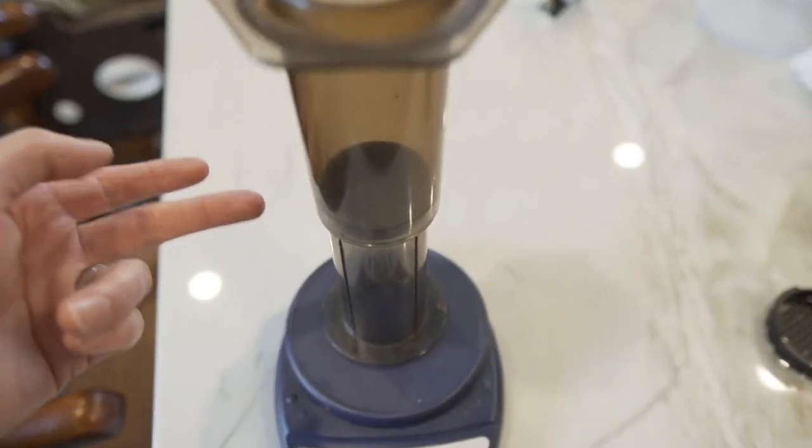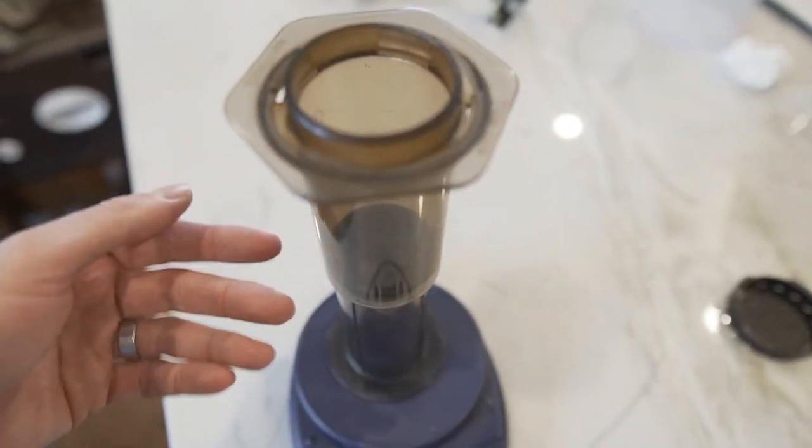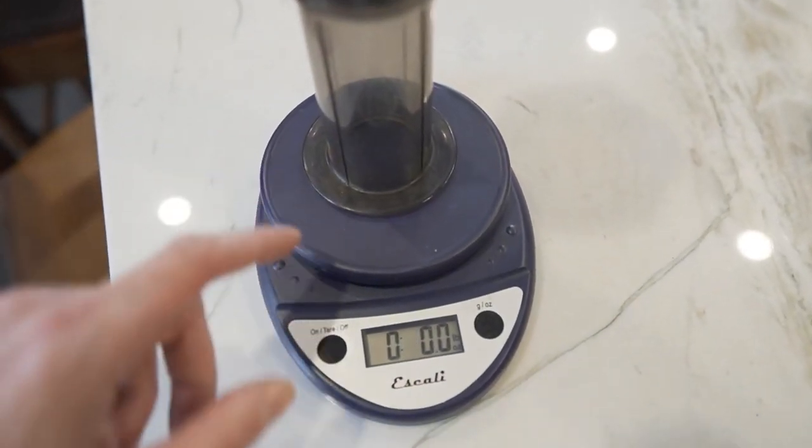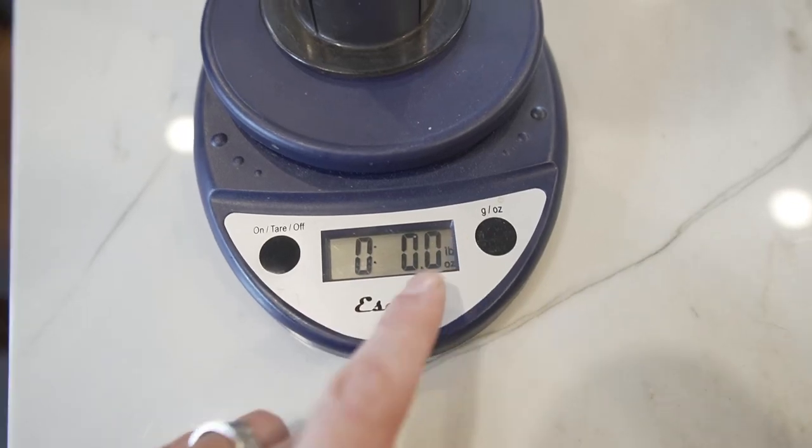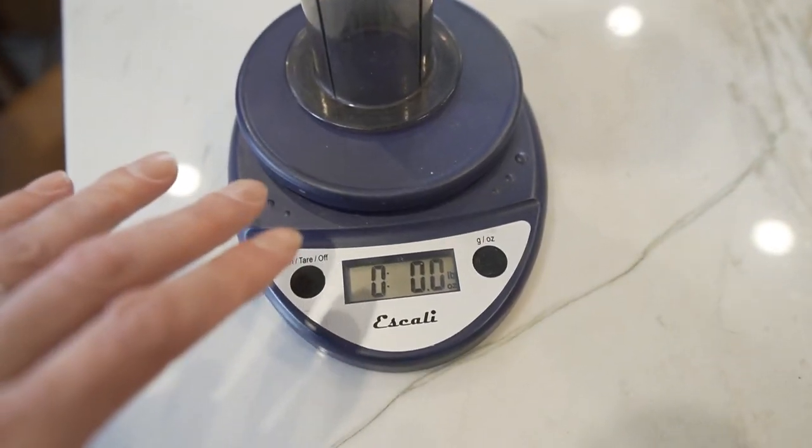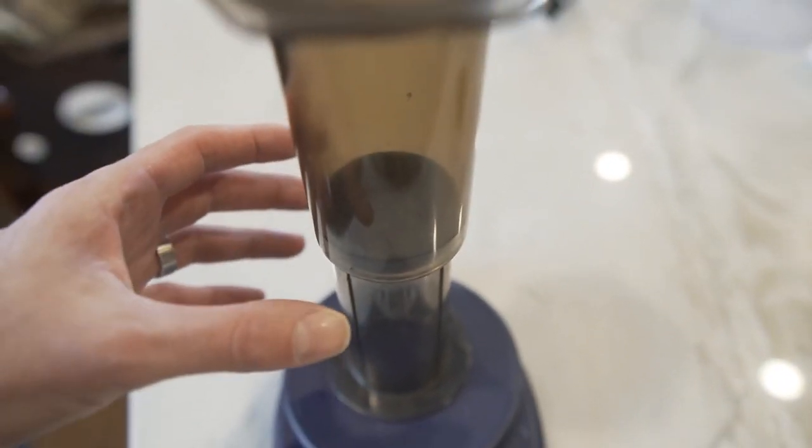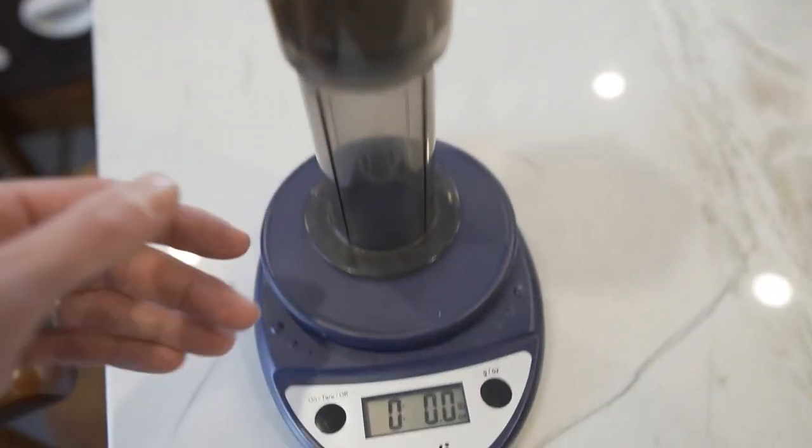I usually put the AeroPress or plate or whatever on the scale first. That way it'll tare automatically. It'll basically zero out whatever container I'm going to put the food in.